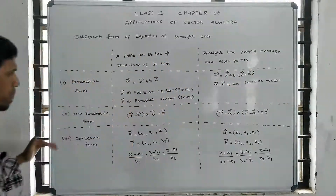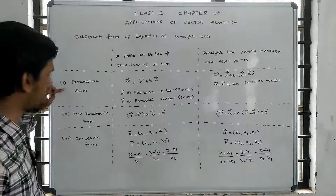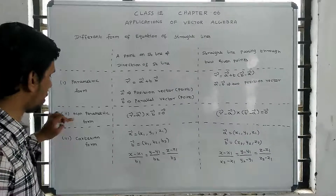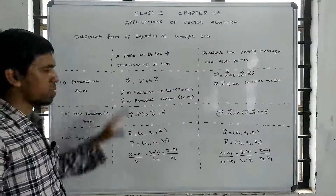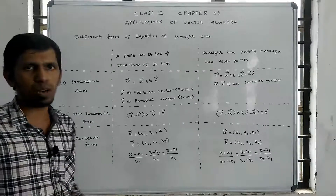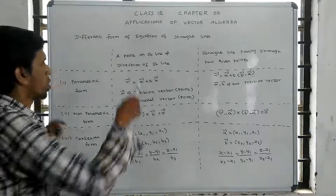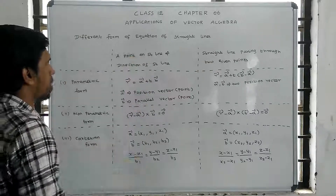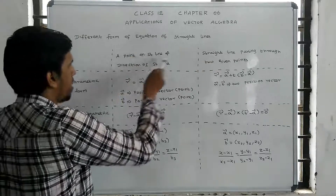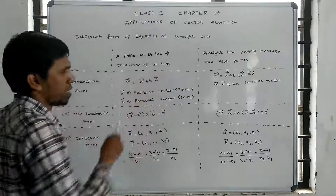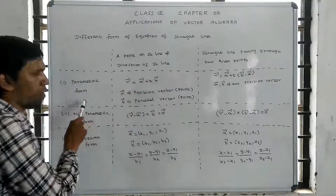The equation of the line can be written in four forms: rectangle form, parametric form, non-parametric form, and Cartesian form. First, we will talk about a point on the straight line and the direction of the straight line — this gives us the parametric form.